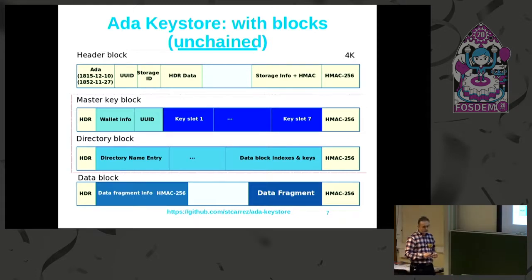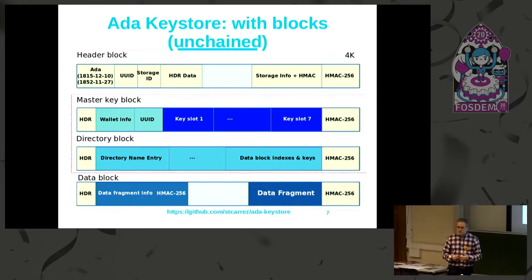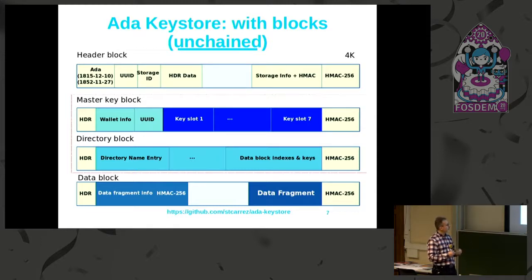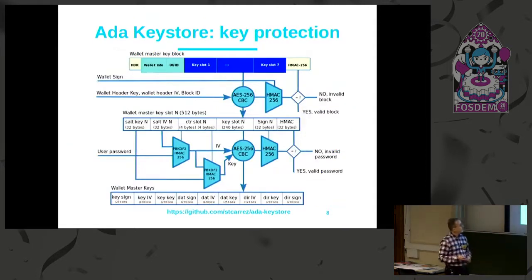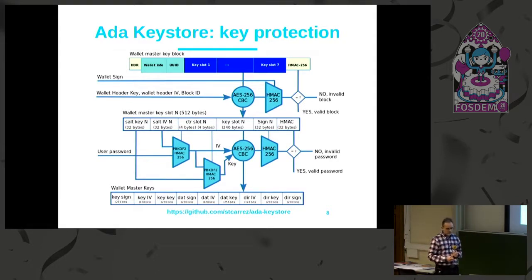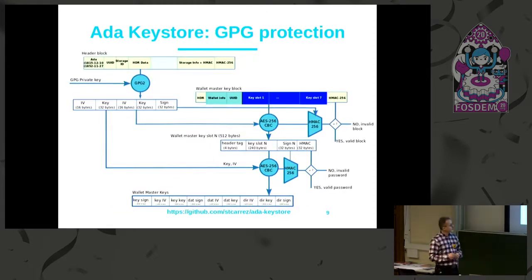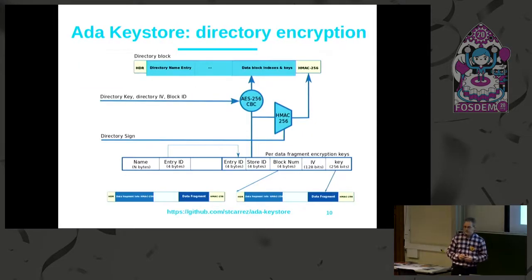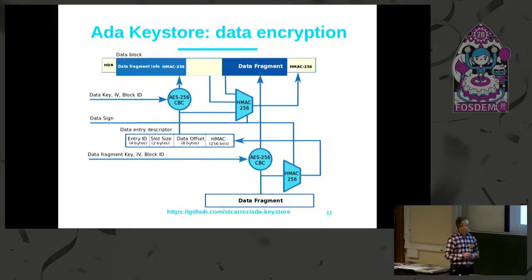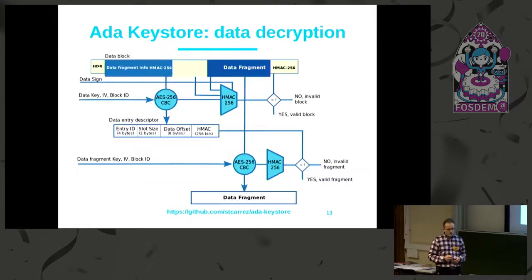Each fragment is encrypted by its own key, which is stored in this area. What you can do is take the data block and put it on the cloud — you don't expose the secure key, because the keys used to encrypt the data are stored in the directory block, which you can separate. The algorithm uses AES and HMAC-SHA-256 with a password-based key derivation. There is also GPG password encryption, directory encryption, data encryption, directory decryption, and data decryption.